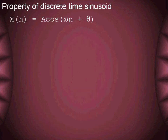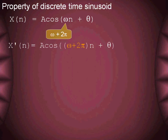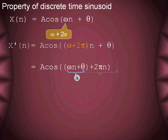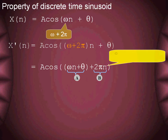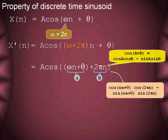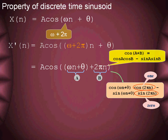Now, let us take a look at an interesting property of discrete time sinusoids. We begin with the expression of the discrete time sinusoidal signal. Adding a frequency of 2π to this signal, the new signal we obtain is called x'[n]. Rearranging the expression and treating the term ωn + θ as a and the 2πn term as b, this expression is identical to the cos(a + b) form.